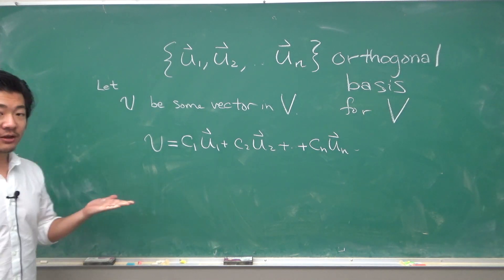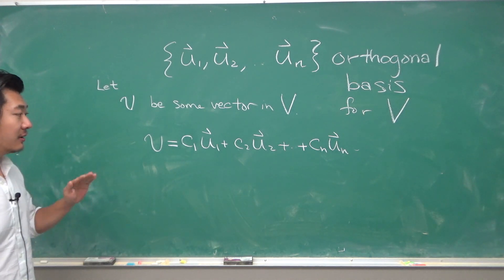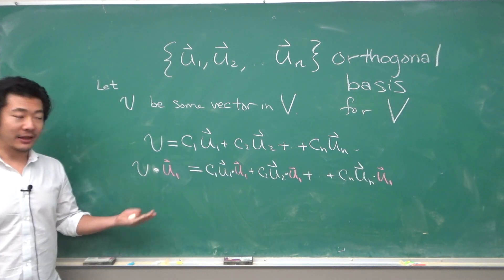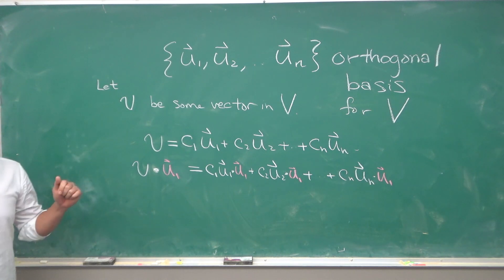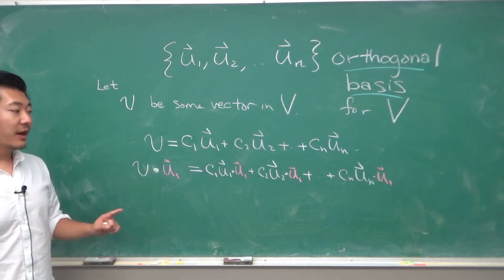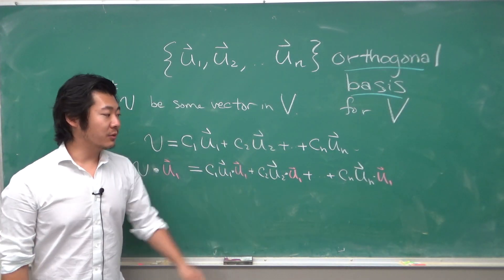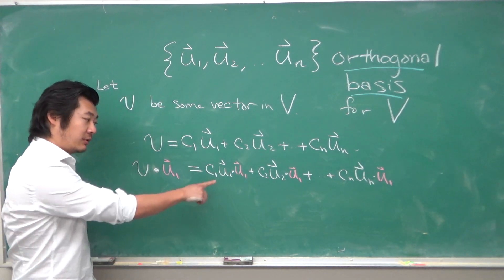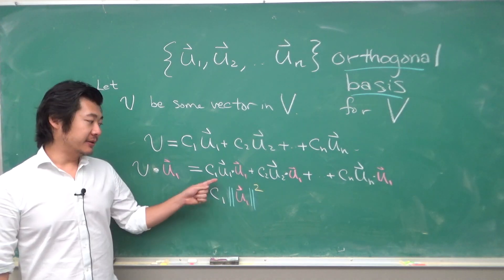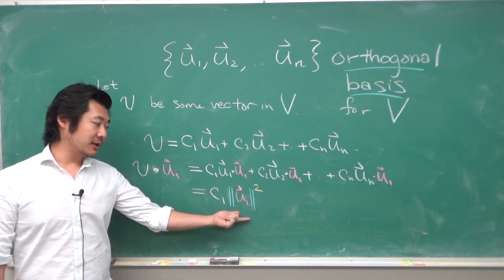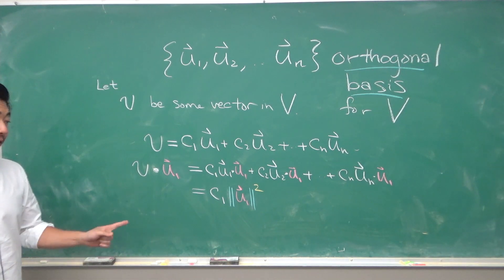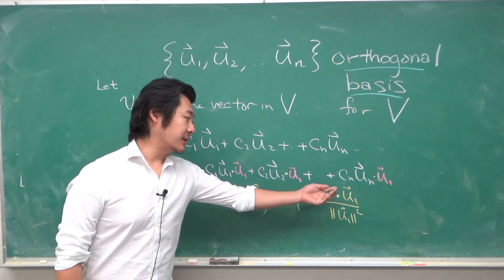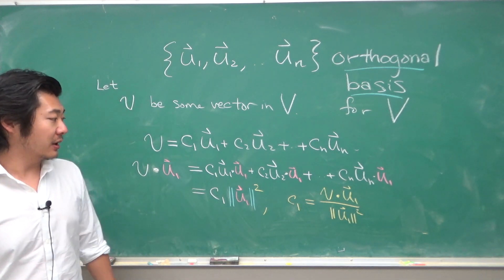Here's something you can do: take the dot product of v and u1. When you do that, you get something like this. But remember that u1 to un are an orthogonal set, so u2·u1, u3·u1, all the way to un·u1 are all zeros. The only one that survives is this one, and the dot product of a vector with itself is the magnitude squared. So we can solve for c1: c1 is given by v·u1 divided by ||u1||².